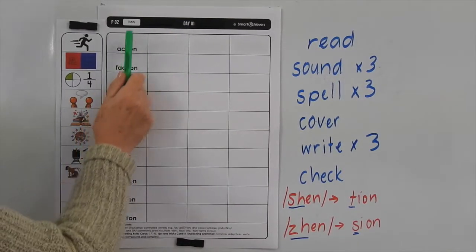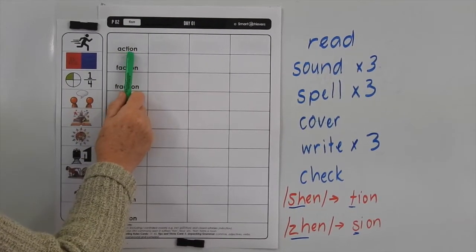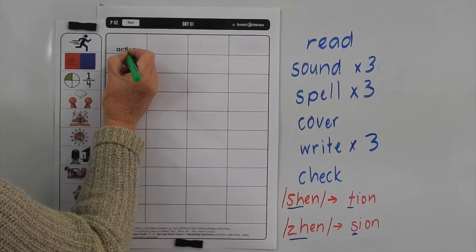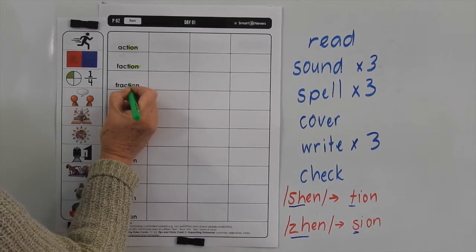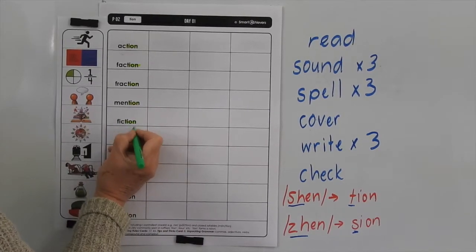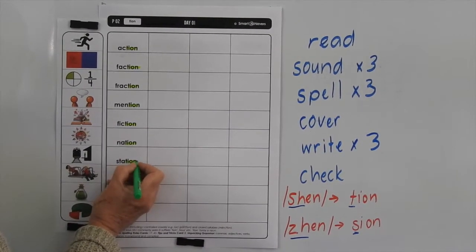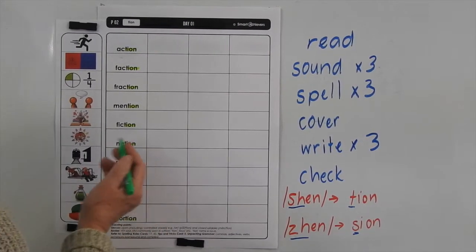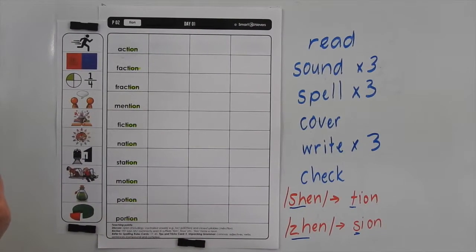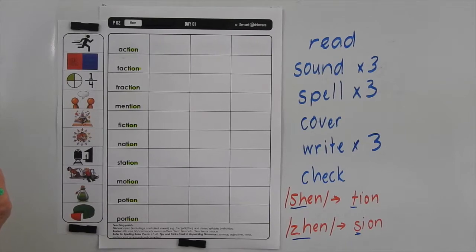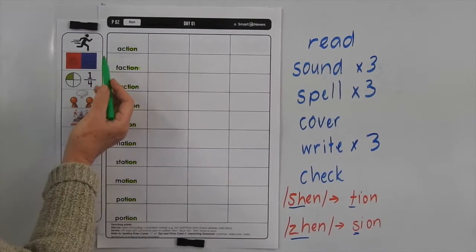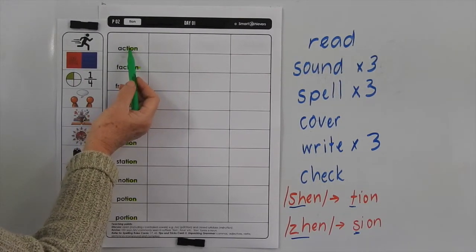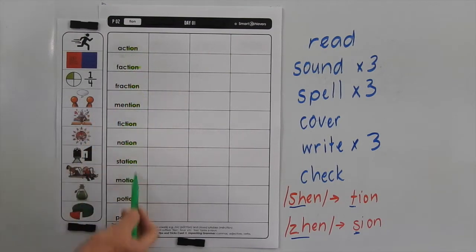We're doing the day one page and here we're adding '-tion' to the end of these roots. So we've got — if you get your highlight ready, let's mark them as we go. We've got action, faction, fraction, mention, fiction, nation, station, motion, potion, portion. So we only use 'sh' at the start or end of words. When we want the 'sh' sound in the middle of a word, we frequently use 'ti'. So you've got other suffixes that might end with 'ti' like '-ous', etc. So here we're just using the '-tion'.